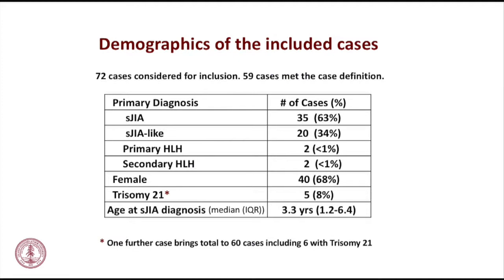Getting to the results: 72 cases were considered for inclusion; some were excluded because they didn't have sufficient data, pathology, or CT, or they had a different disease and different treatment approach. This was SJIA and SJIA-like, so it includes those with and without arthritis. The range of arthritis is from none to severe — most do have arthritis, and some only get arthritis when the lung disease comes. There are two cases of primary HLH included because it's the same treatment approach and the genetic association was found during treatment.